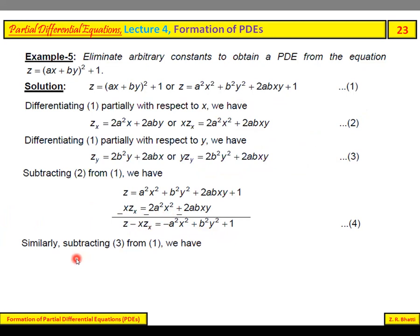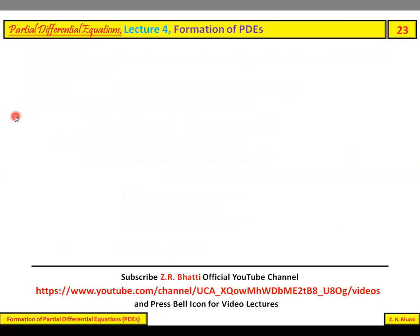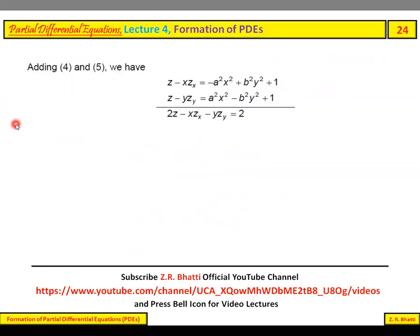Similarly, subtracting equation (3) from equation (1), we have z - yz_y = a²x² - b²y² + 1, which is equation (5).